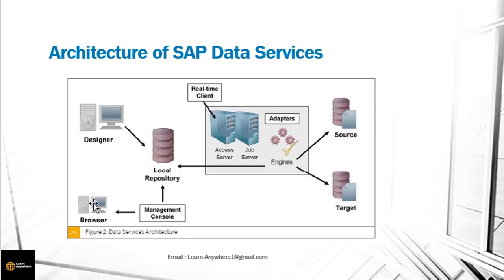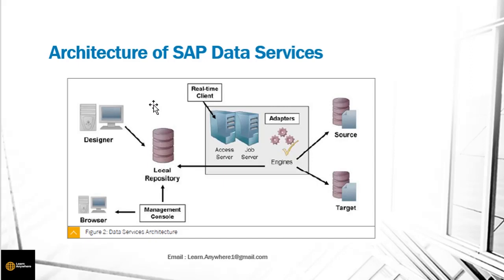An admin can also use Management Console for various admin activities. We have two types of repository: local repository and central repository. Local repository is a must for running BODS — this is where everything gets stored, all the objects, all the metadata. Central repository is optional and is used mostly by admin to maintain versioning of the objects.